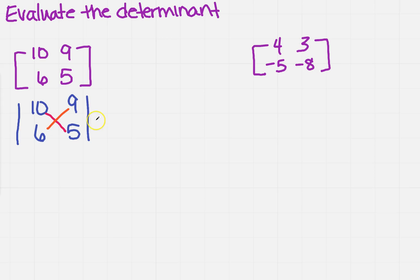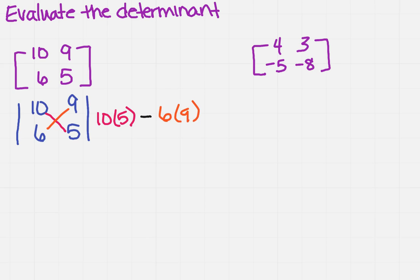What is it that you do with those numbers? I take 10 times 5, and remember as you go from left to right, I'm going to subtract the product as I come back to the left: 9 times 6. So this gives me 50 minus 54, so the value of the determinant is minus 4.